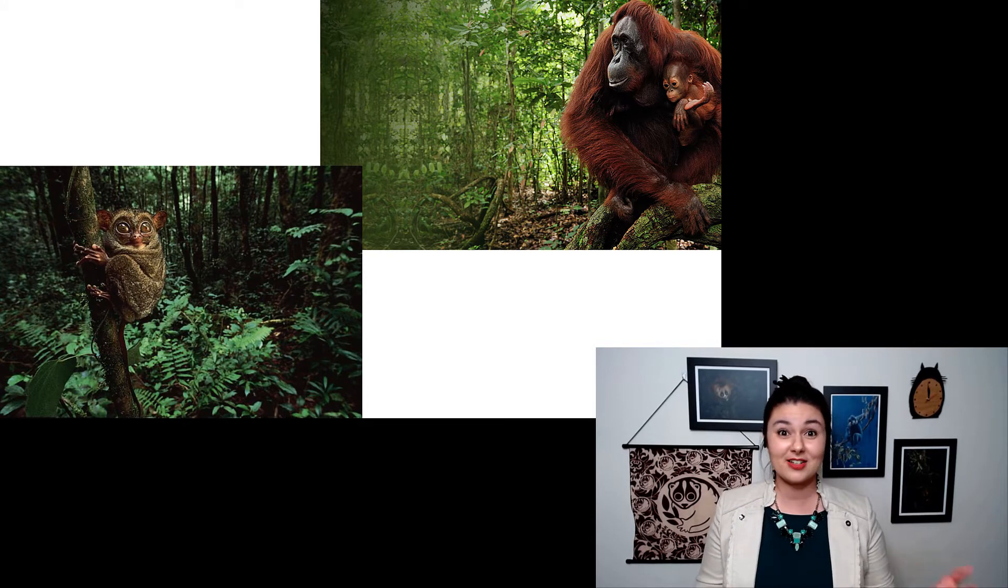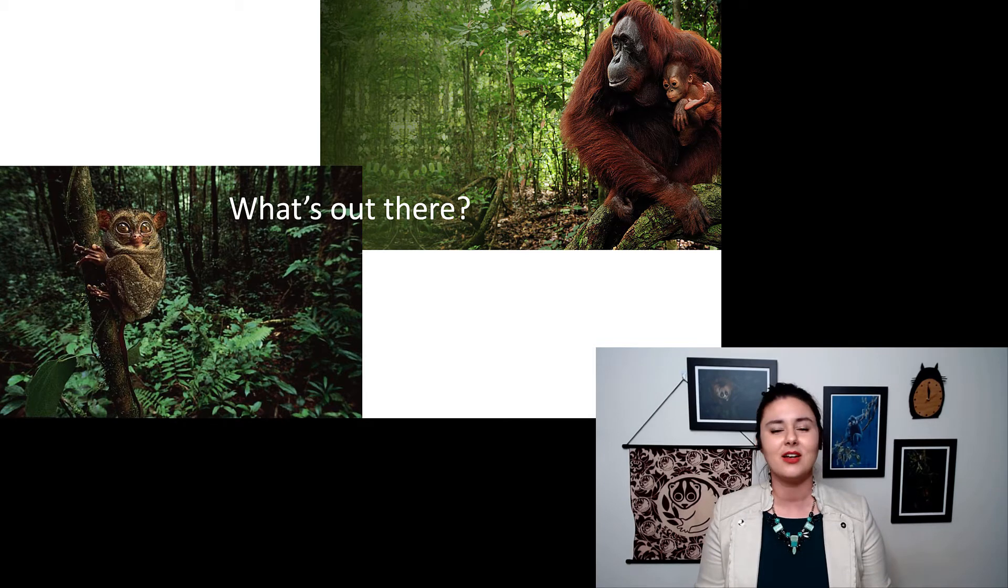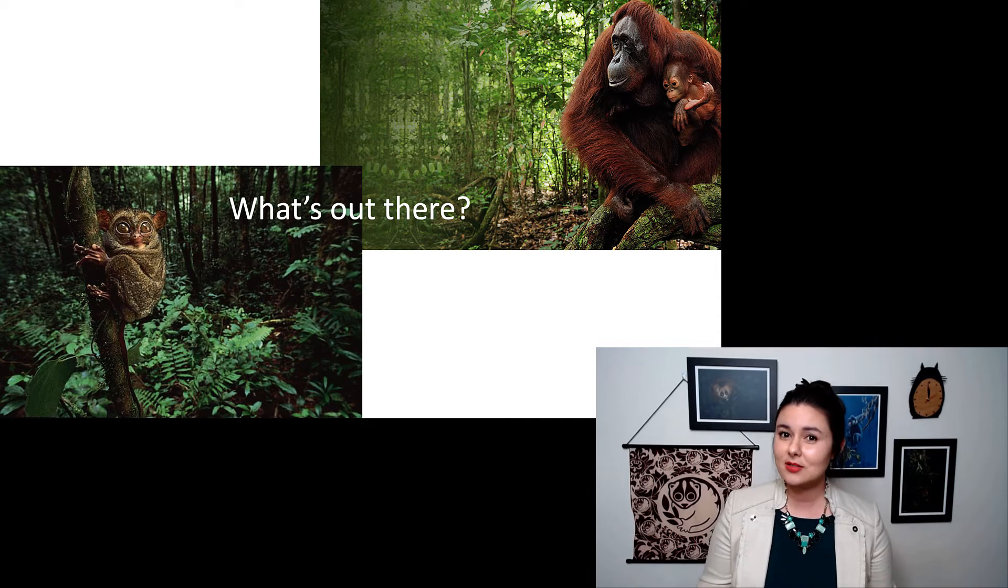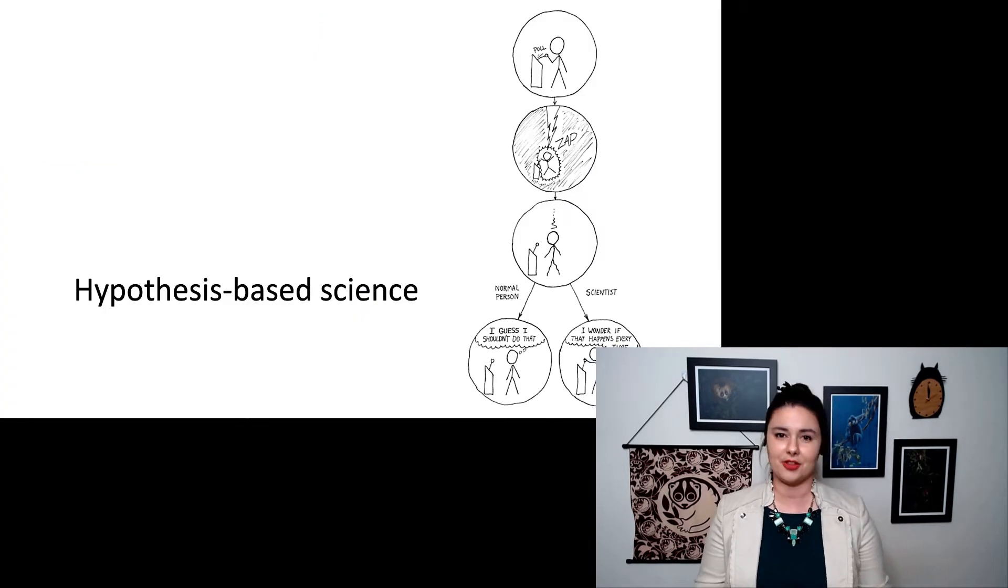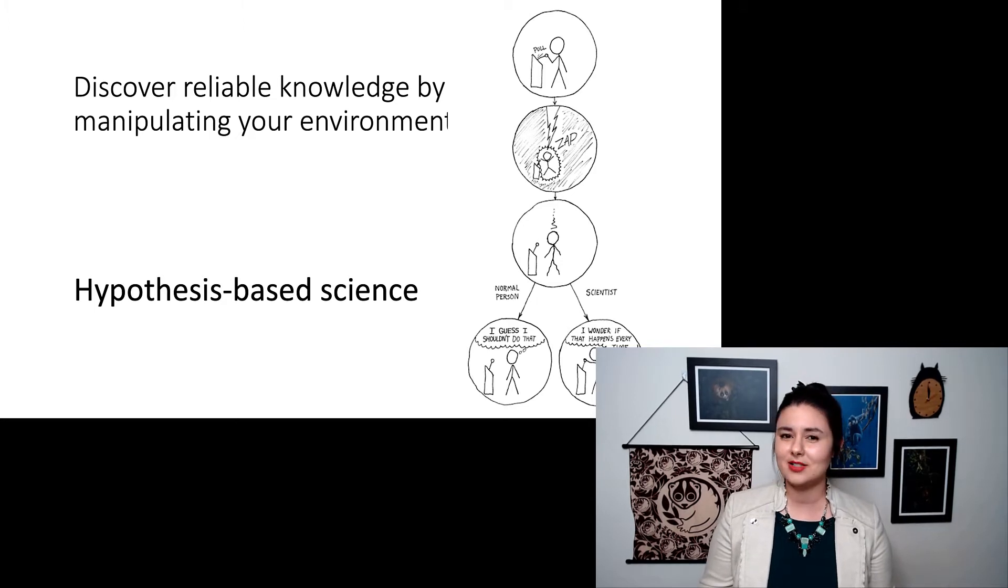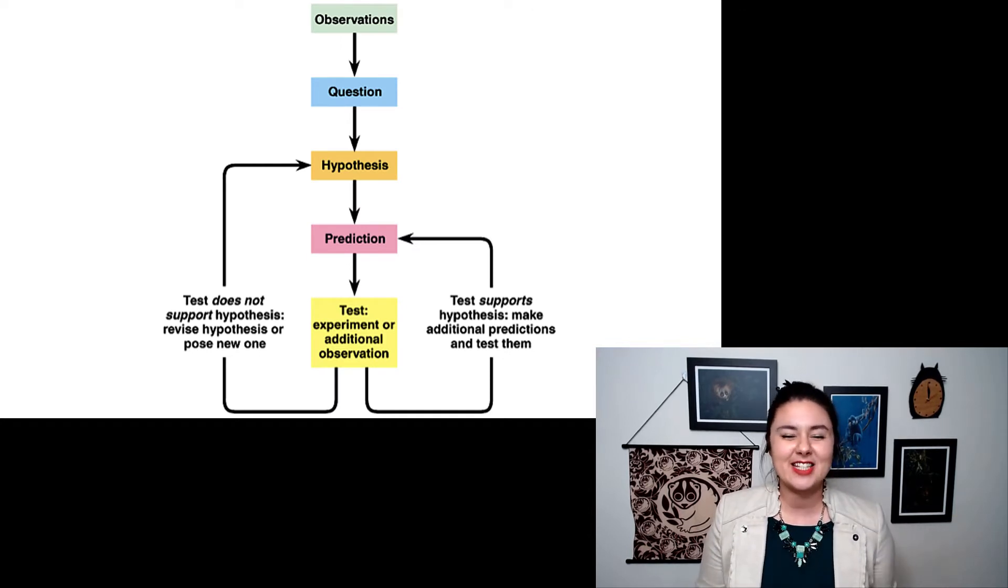Once we've made some observations, now we can start to make some predictions, and that's where hypothesis-based science comes in. Here we want to discover reliable information because we are manipulating our environment. We are molding, we are changing so we can learn something new. In this comic, a normal person when there is a podium that zaps you with lightning probably wouldn't do it again, but a scientist will wonder if that happens every time.